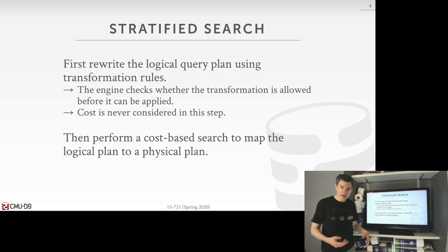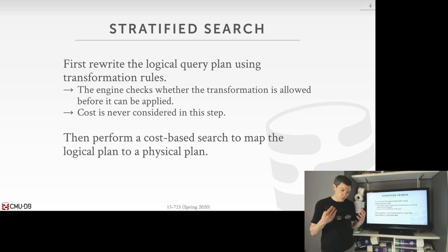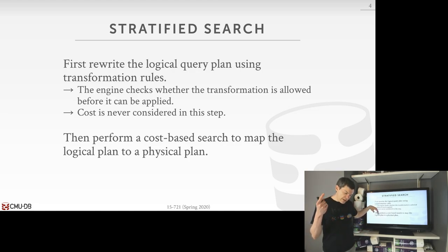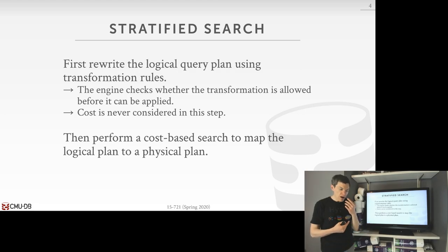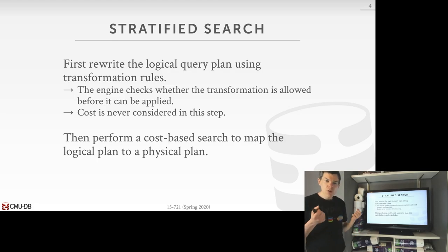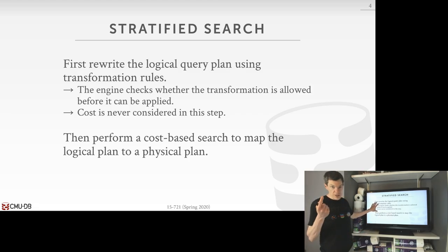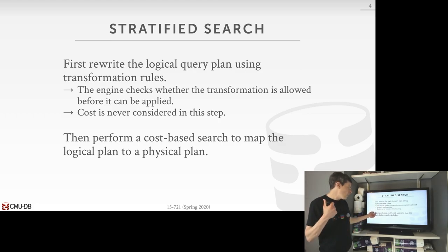Reiterating: the stratified search has rules to do logical query plan transformations. There isn't just a list of rules applied one after another — there's a rule engine that looks at the query plan, finds patterns matching the rules we've defined, and fires them off to make changes. But in this first step, it's entirely done without consulting a cost model, because there is no cost model. Then after this, we do the cost-based search to map the logical plan to the physical plan — that was the IBM technique.